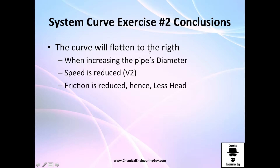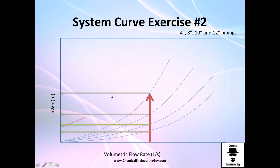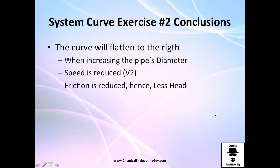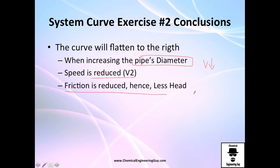The conclusions: the curve will flatten. As you can see, the four inch curve is very steep and the larger pipe curve is very flat. The system curve will shift when increasing the pipe diameter because velocity is reduced. And since velocity is reduced, friction is reduced, and therefore the amount of energy required will also reduce.